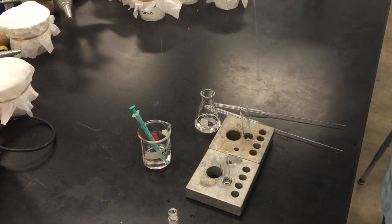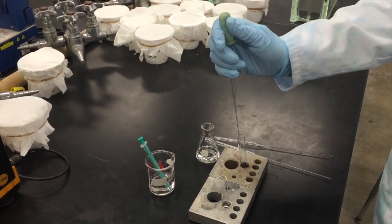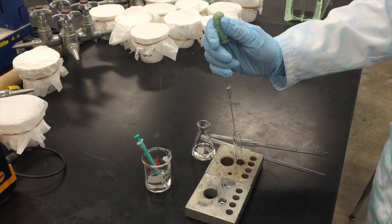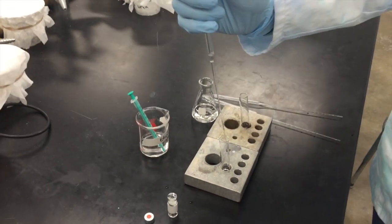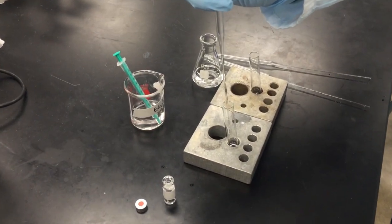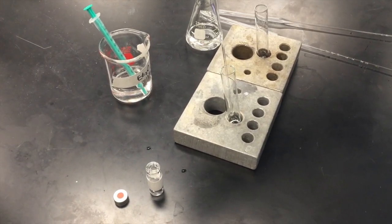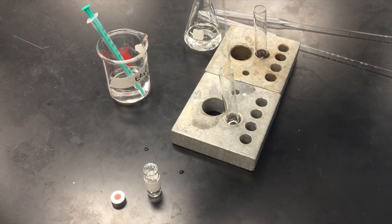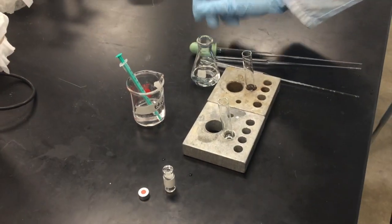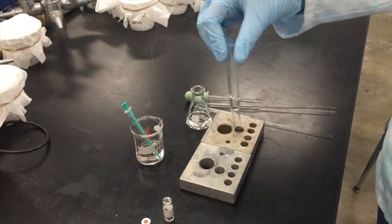Using a new pipette with an amber bulb attached, add three to five drops of the solution in test tube one to the second test tube. Swirl the test tube to mix.